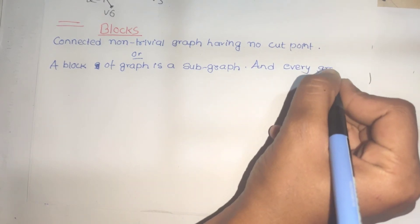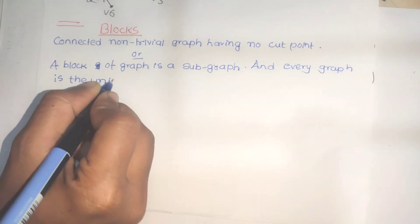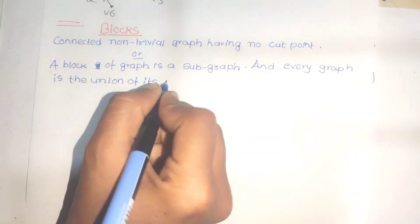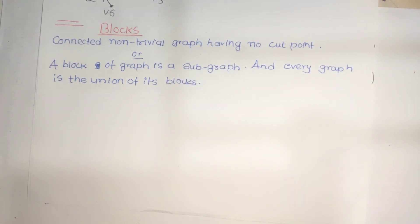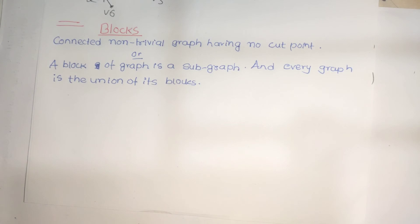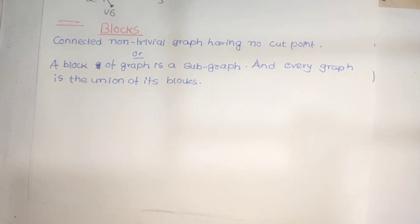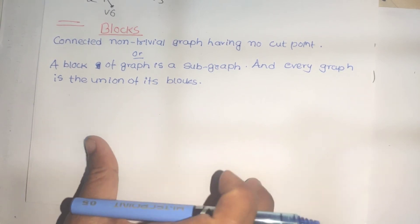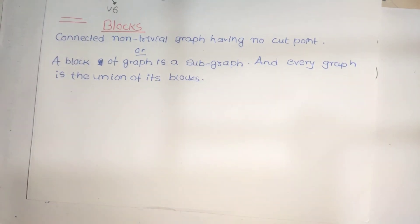Every graph is the union of its blocks. The blocks are subgraphs, and every graph is the union of its blocks. There can be different blocks forming a graph.